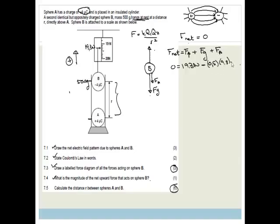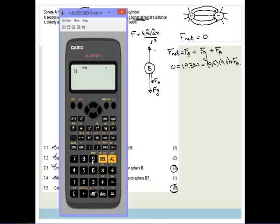F net is going to be the force up of 19.3 Newtons, minus the force of gravity, which is its mass, which is going to be 0.5 times by 9.8, minus the force applied. In fact, we're just going to keep it as plus, because this should work out to be a minus. And that's the plus the force due to A.